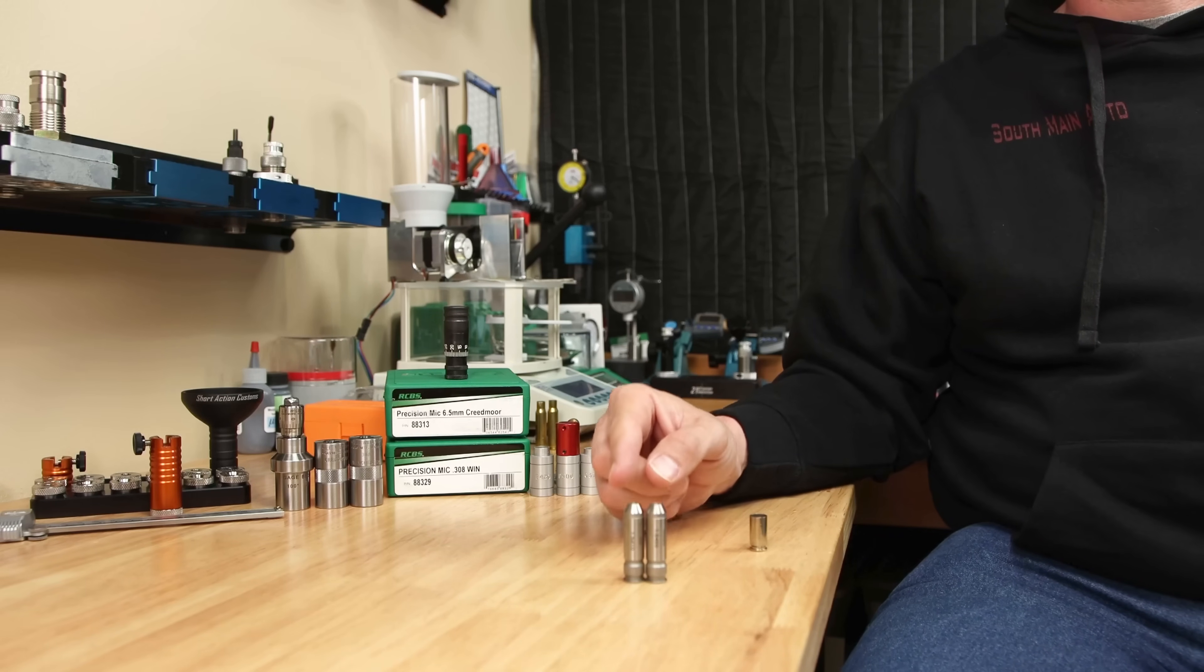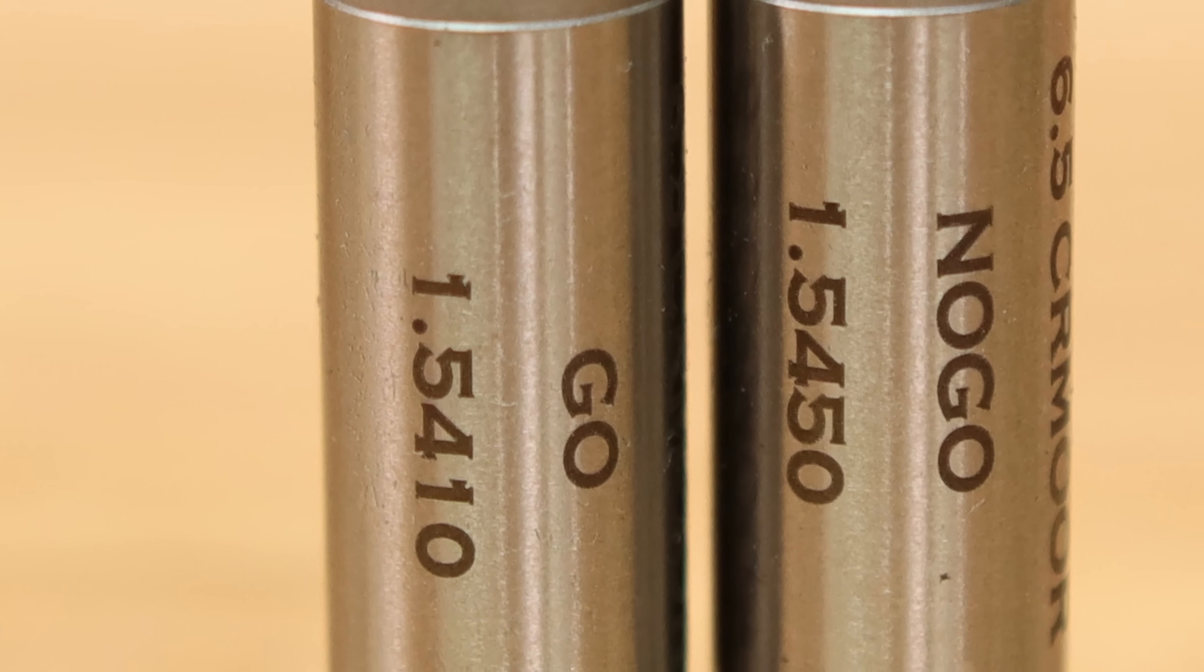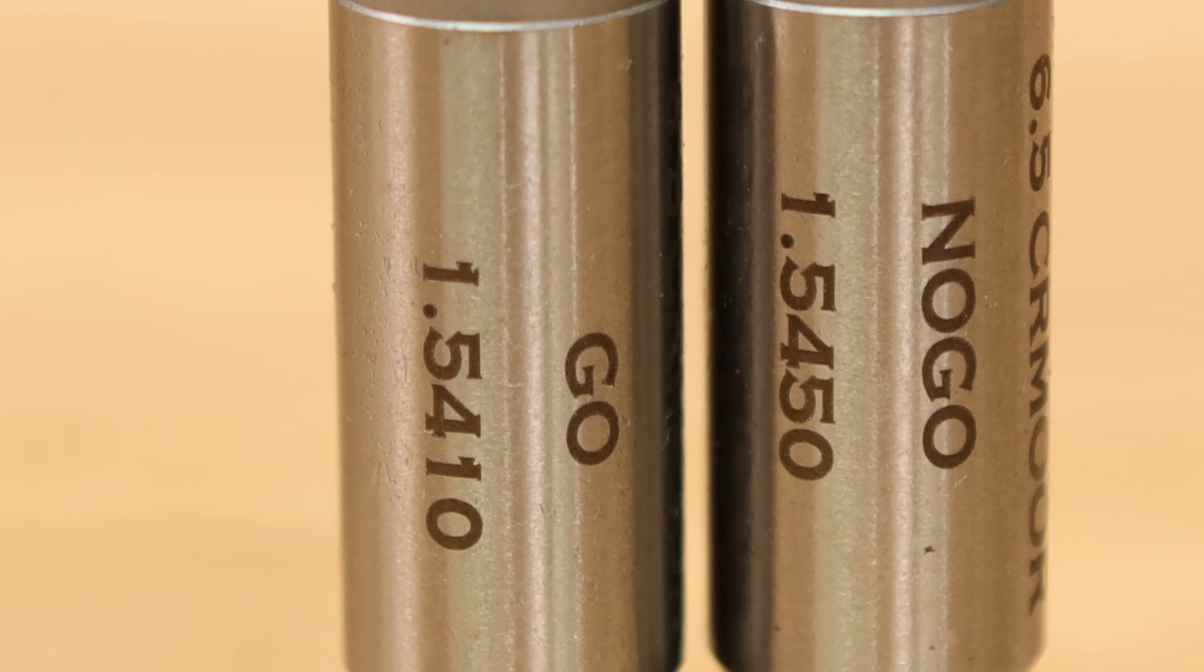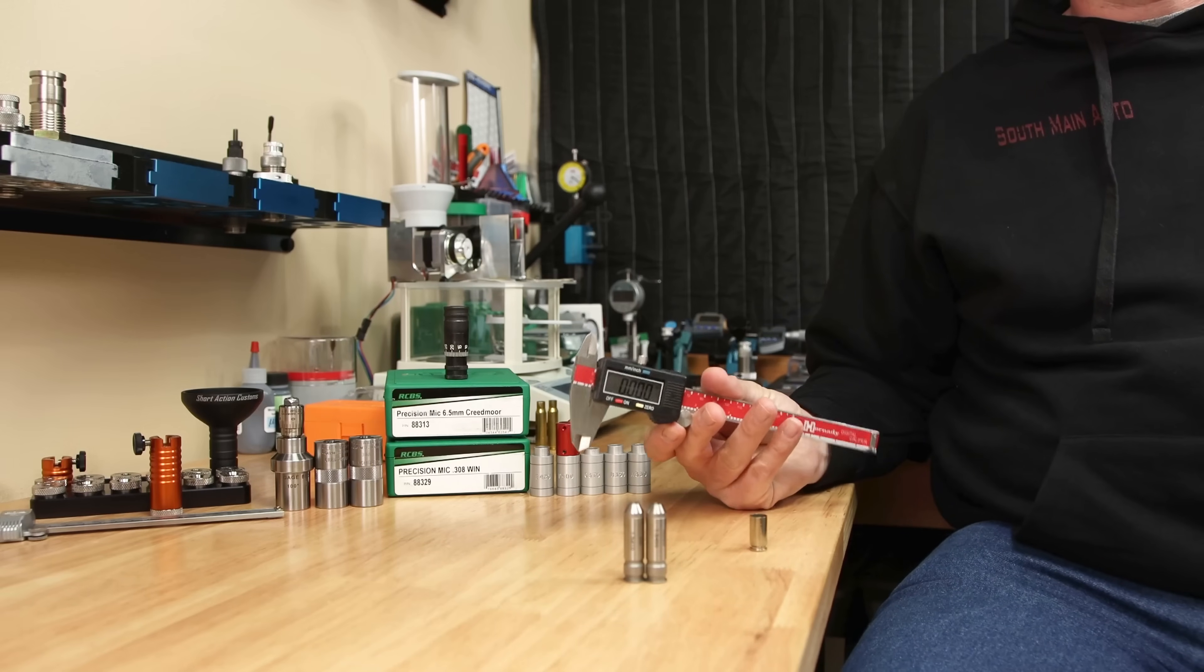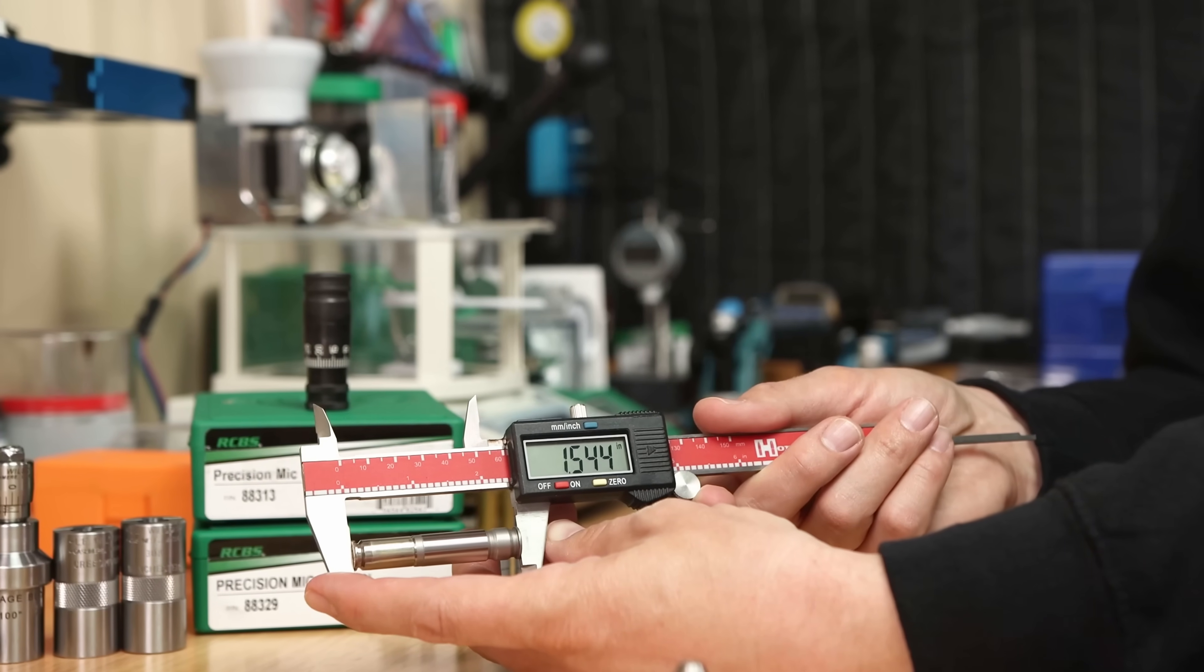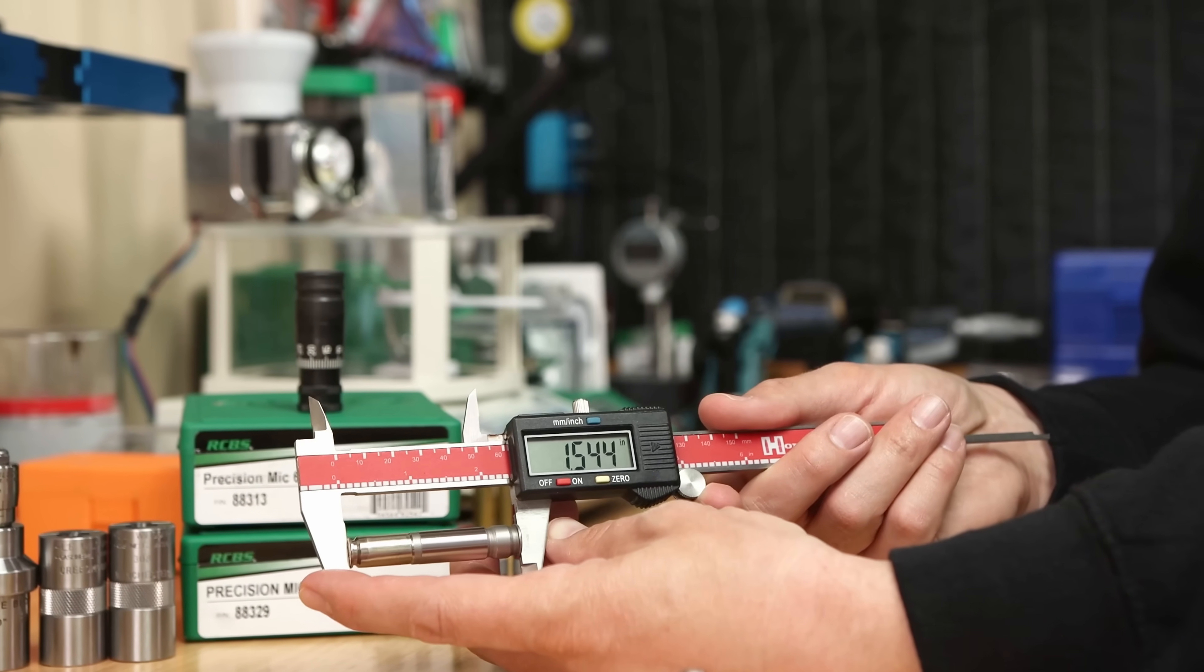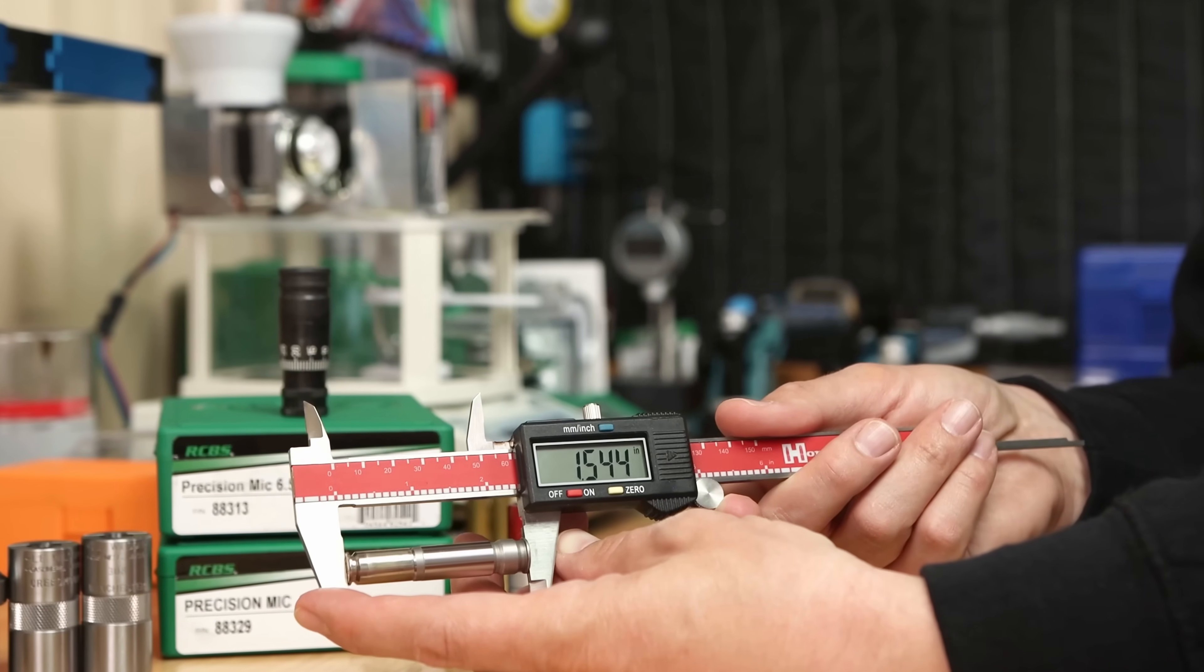When we talk about our headspace gauges, we need to know that the go gauge measures 1.541 inches to the datum line. And the no-go gauge measures 4 thousandths higher than that. So 1.545 inches. So we're going to need to take some type of a comparator. We can see if we zeroed on our case and then measured the headspace gauge for our go gauge, which is 1.541 inches, we're actually measuring 1.544.